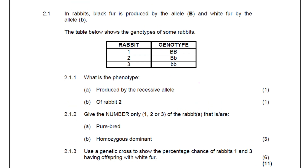Let's see what we have here. So we are given question 2.1. In rabbits, black fur is produced by allele capital letter B, and white fur is produced by small letter B. Now that is enough information for you to understand what is happening here, because when we talk about monohybrid crosses, we are basically talking about one trait, one gene, or one characteristic being investigated.